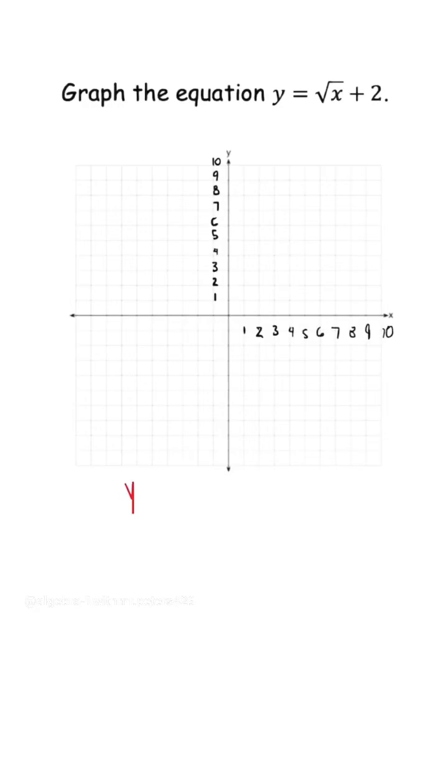To graph a radical equation, there's two methods. The first one is the parent function, y is equal to the square root of x, with key points 0, 0, 1, 1, 4, 2, and 9, 3.